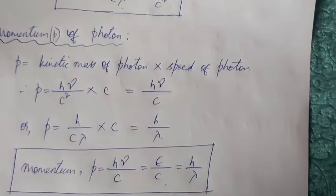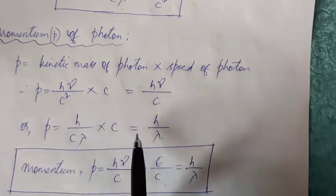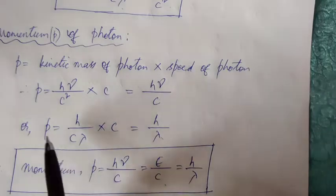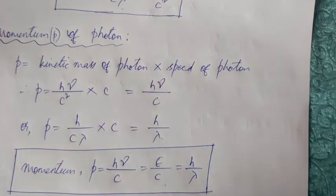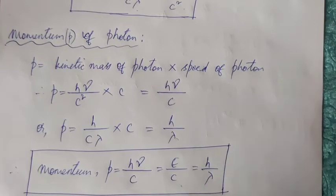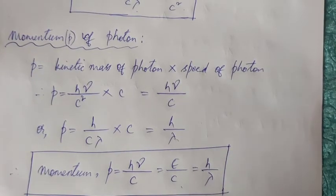The reason I say pay attention to this that is momentum is h by lambda because we are going to do something called de Broglie hypothesis where we will need this. P is h by lambda. You might get simple numericals based on these equations also. Thank you all so much.